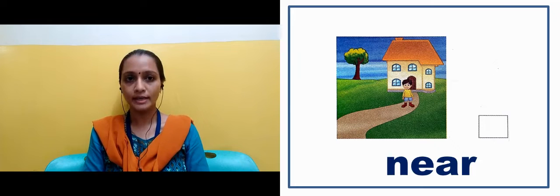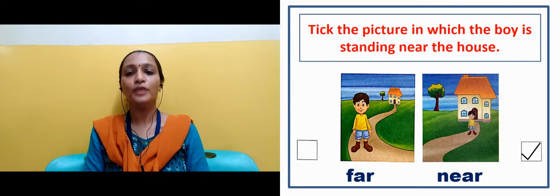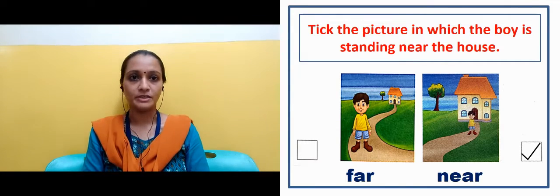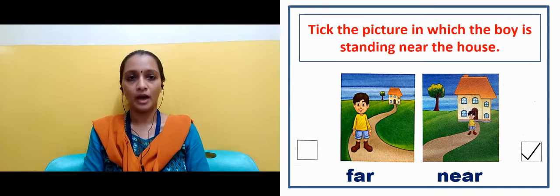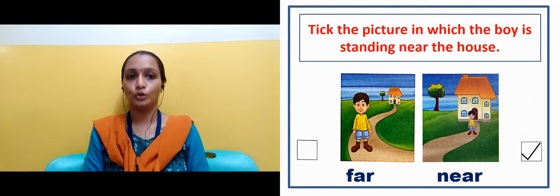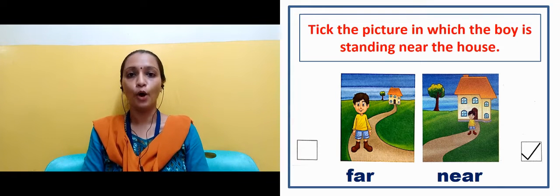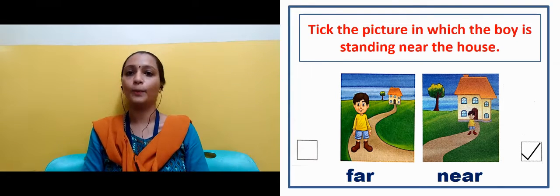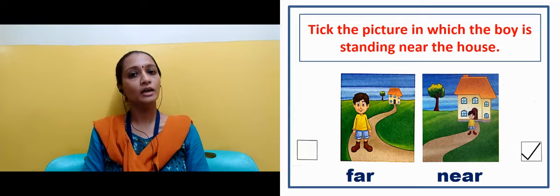Now in the next slide we can see that there are two images, and in your book there is a question: in which image is the boy near to the house? You can see that the boy is standing near to the house.